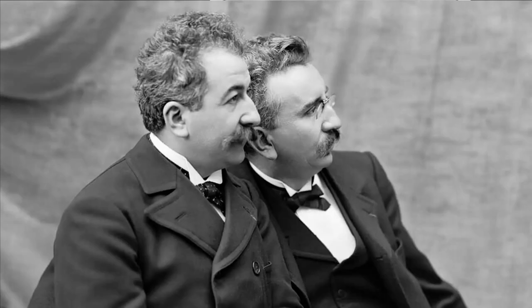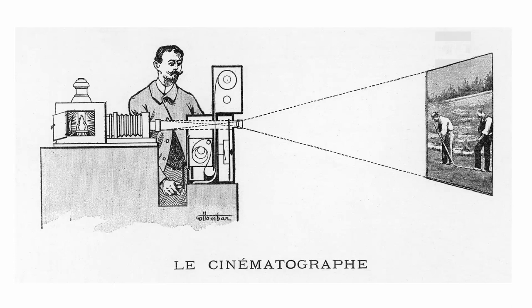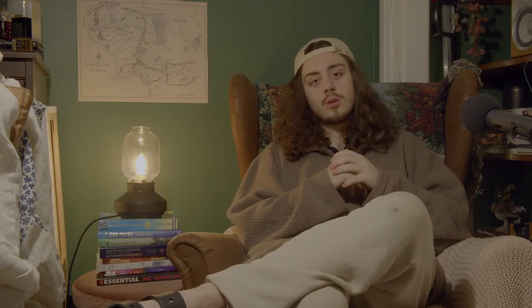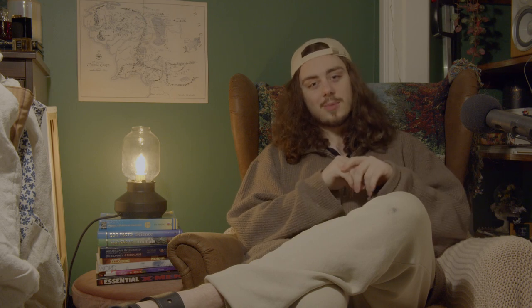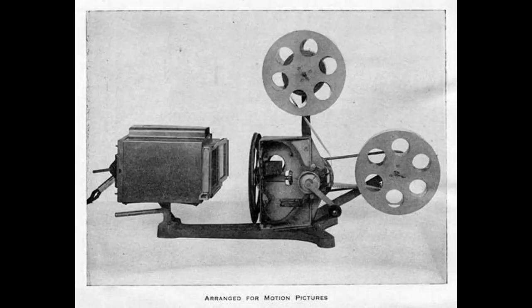Edison and Dixon weren't the only ones working on the camera. Over in France, the Lumiere brothers were working on their own design known as the Cinematograph. Improving on Edison and Dixon's design, the Cinematograph not only recorded images, but was also able to develop the film and project them onto a screen. The Cinematograph was portable and powered by a hand crank, different from the Kinetograph, which was stationary and required electricity. Edison saw the commercial success of the Cinematograph and responded by adopting the Vitascope.